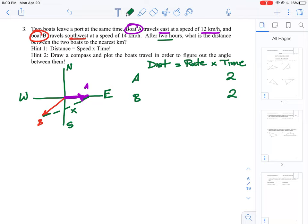We know how fast boat A is going. It is going at 12 kilometers per hour, and boat B is traveling at 14. That gives us the ability to actually calculate the distance.